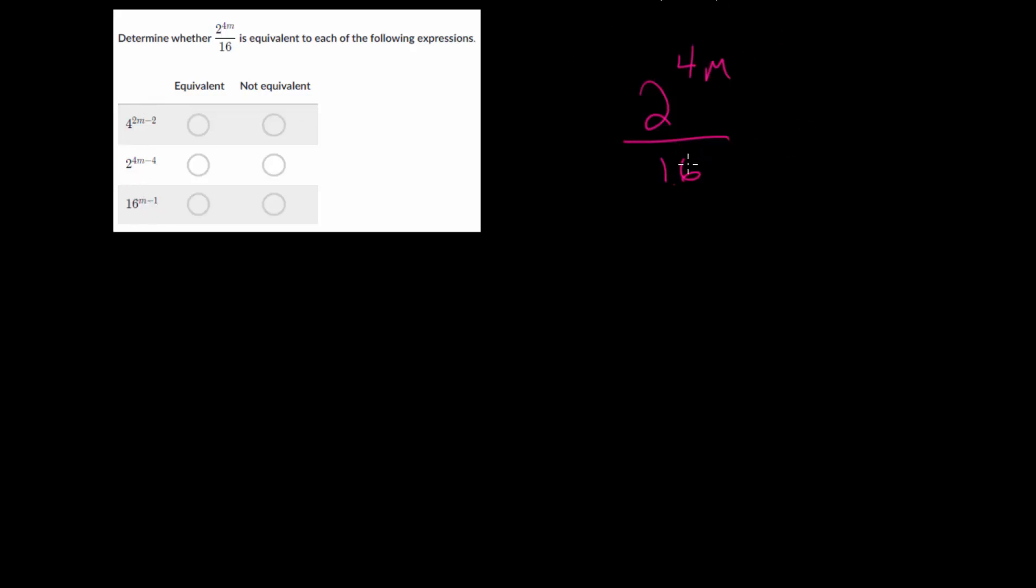And for this one, we have an expression up top where the base is raised to an exponent multiplied by something else. So we have a product in our exponents, which means we can rewrite this as an exponent to an exponent. So that's 2 to the 4th raised to the m over 16. And 2 to the 4th we know is just 16. So we have 16 to the m over 16.